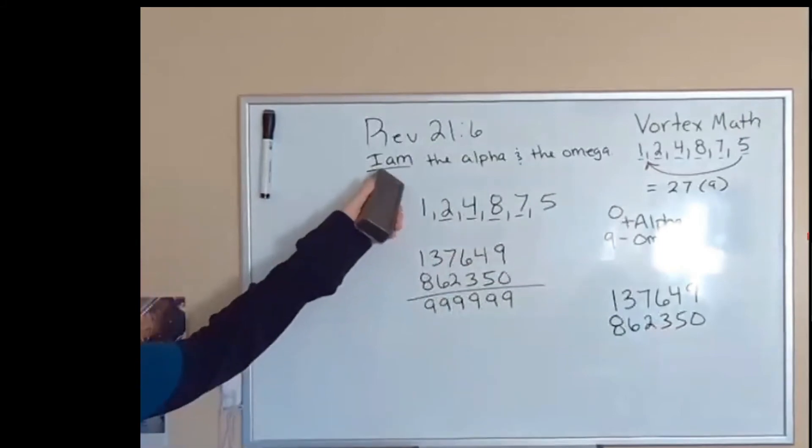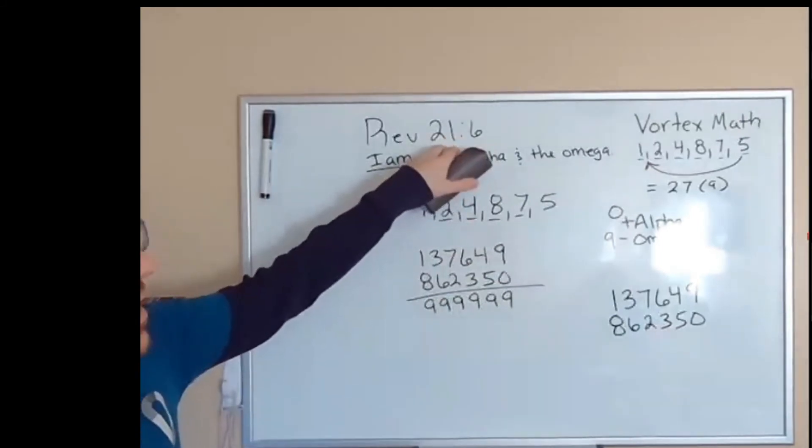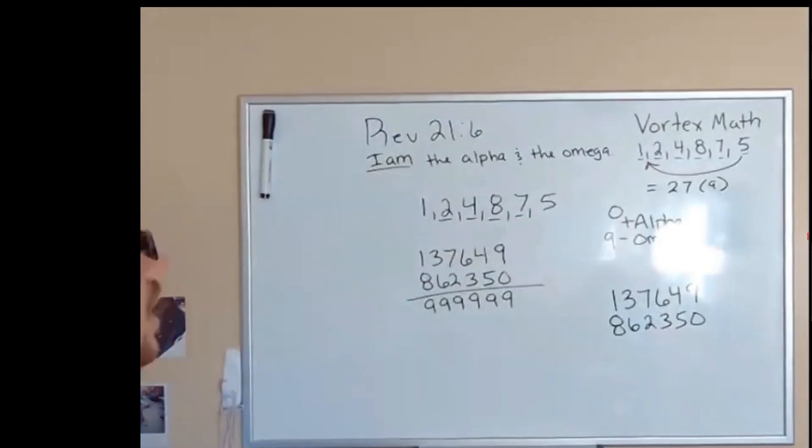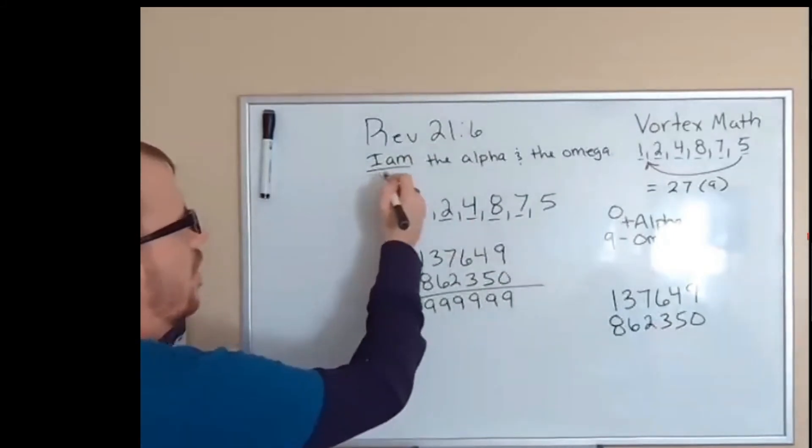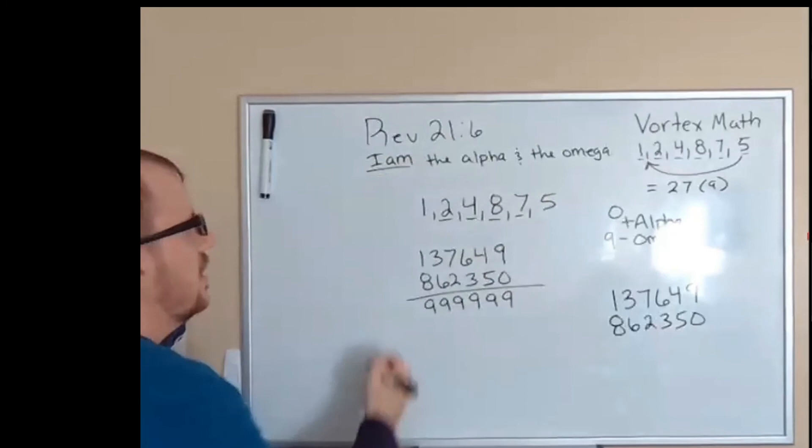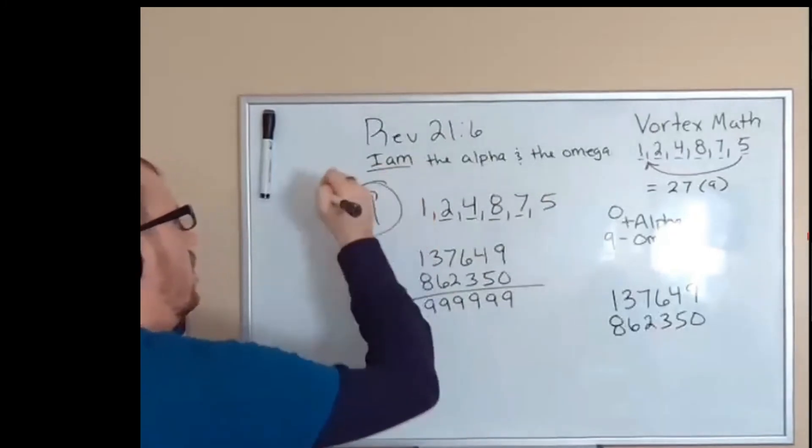When it says Revelations 21:6, which by the way is also a nine because two plus one is three and six is nine, I am the alpha and the omega, the beginning and the end, it is talking about the number nine.